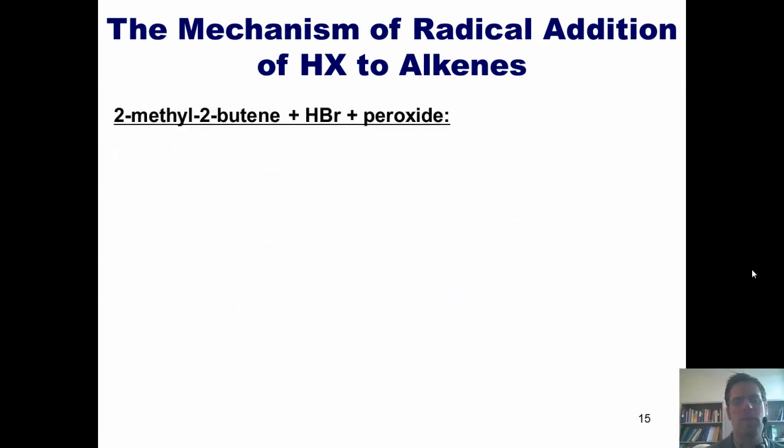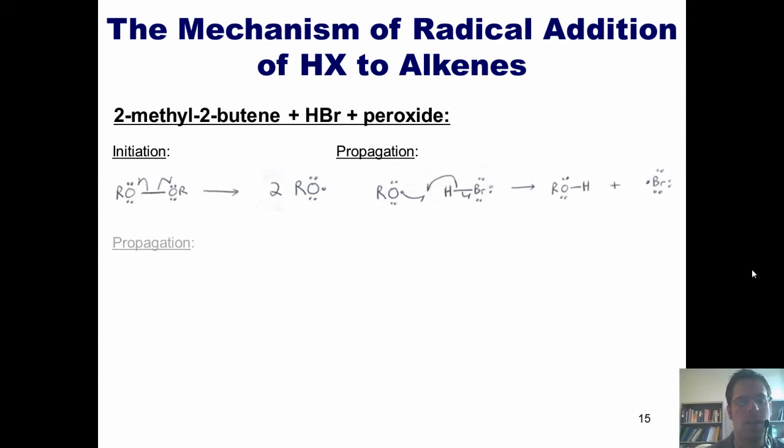But what occurs if I react 2-methyl-2-butene and HBr under radical conditions? That is, adding peroxide in light and heat. Well, as I've shown before, the first step that occurs is initiation. The peroxide molecule breaks apart homolytically, forming two individual oxygen radical molecules. In our first propagation step, one of these oxygen radicals combines radically with the hydrogen in HBr, kicking off the Br as shown here to form an alcohol and a Br radical. In my next propagation step, my Br radical now combines radically with one of the two pi electrons in this double bond.